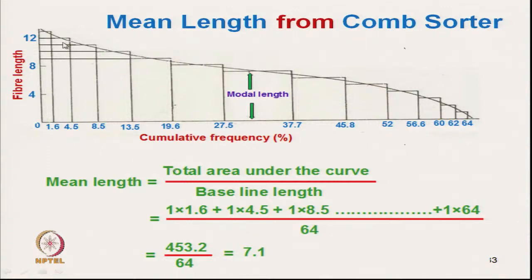To get the histogram from the sorter diagram: from each unit interval on the length axis, we draw a rectangle whose width is determined by the intersecting point at the midpoint of that interval. This gives the first bar of the histogram.